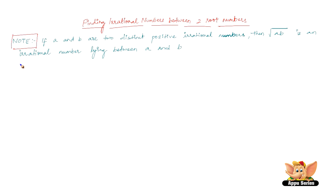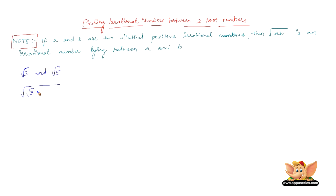Now let us do an example to understand how to find an irrational number between two root numbers. Let us take √3 and √5, and find an irrational number between them. From the note, here √3 is a and √5 is b. Therefore, √(√3 × √5) is the irrational number present between √3 and √5.